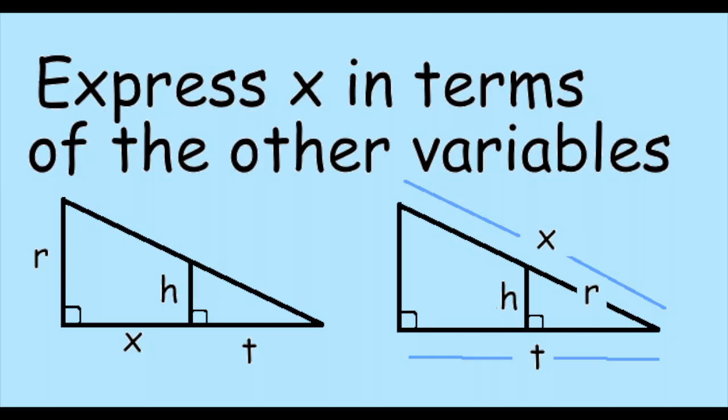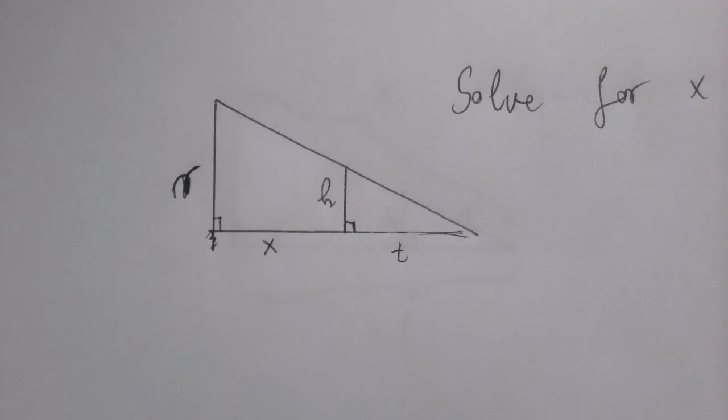So we are asked to solve for X, given the picture. What we see, two similar right triangles.